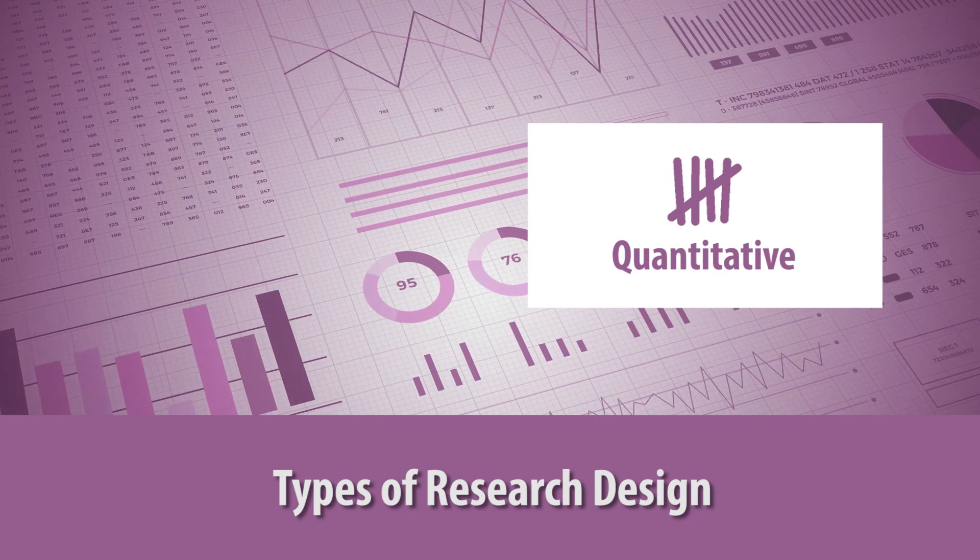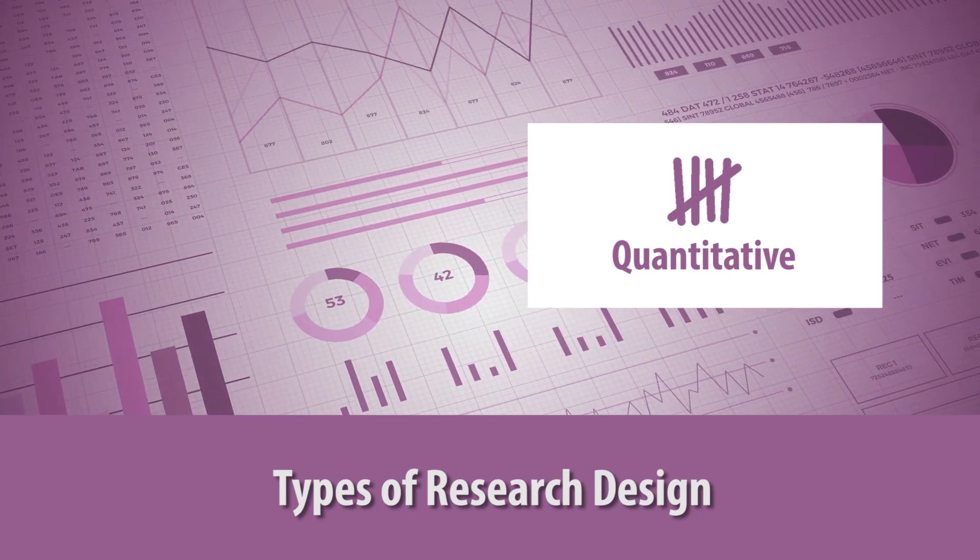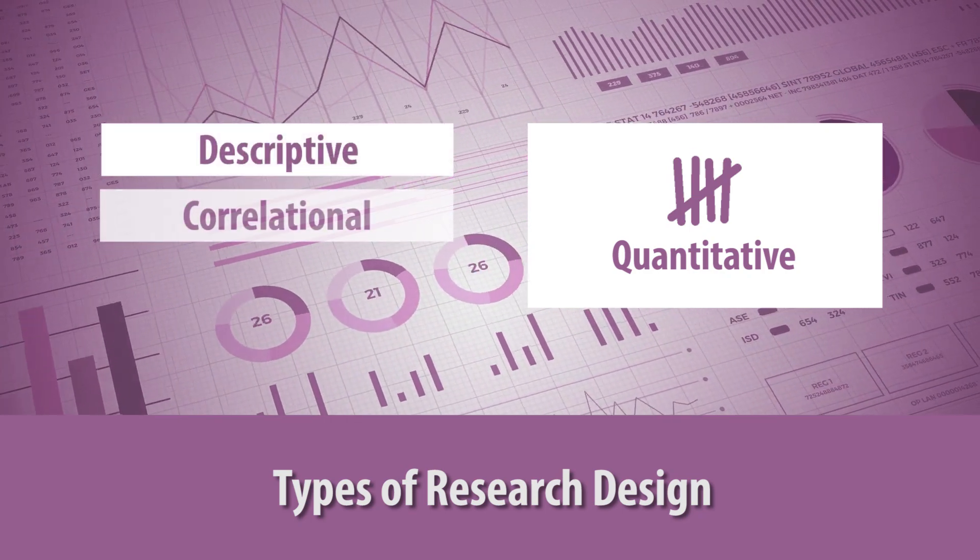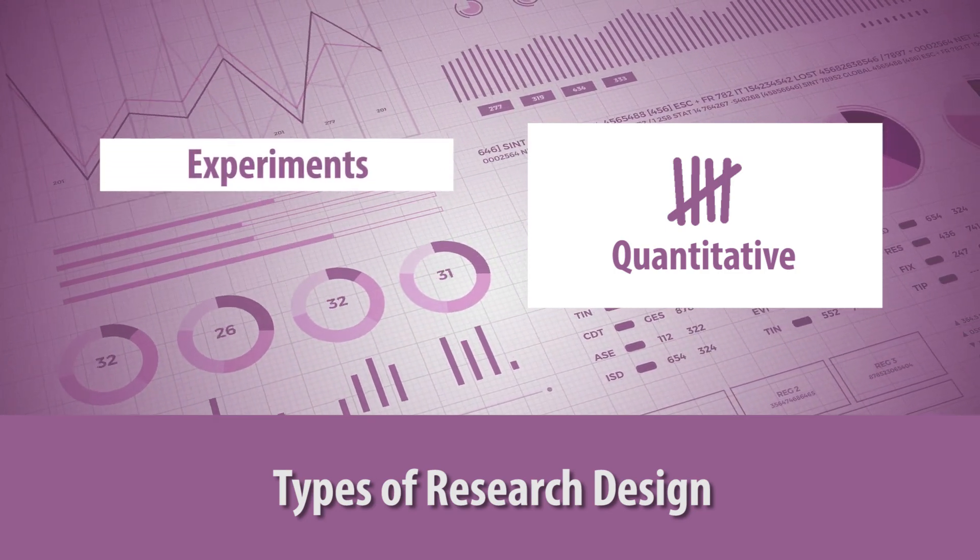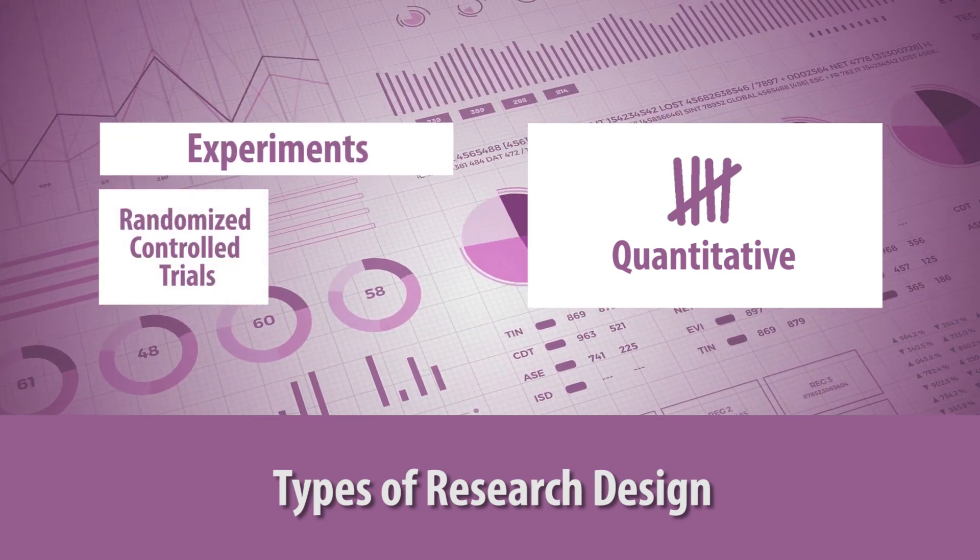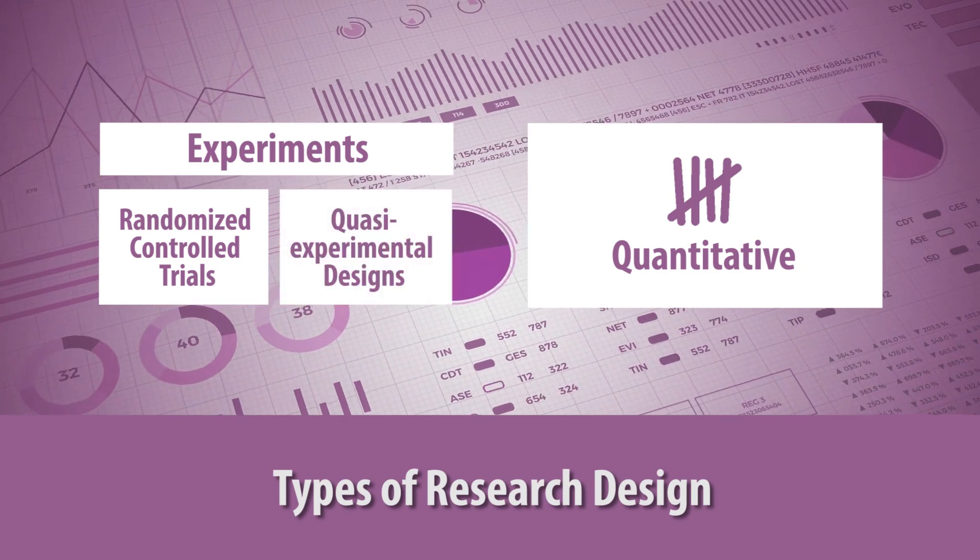There are three main types of quantitative research design: descriptive, correlational, and experiments. There are two types of experiments: randomized controlled trials and quasi-experimental designs.